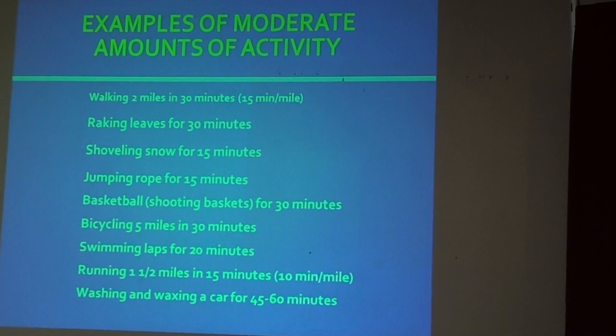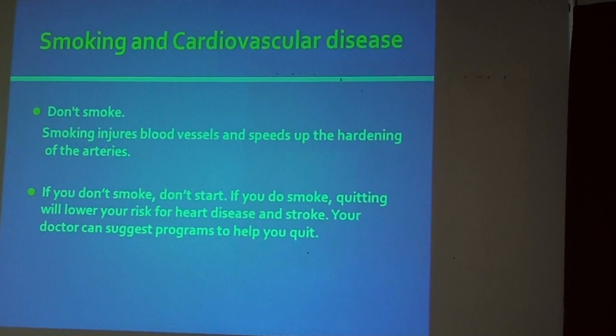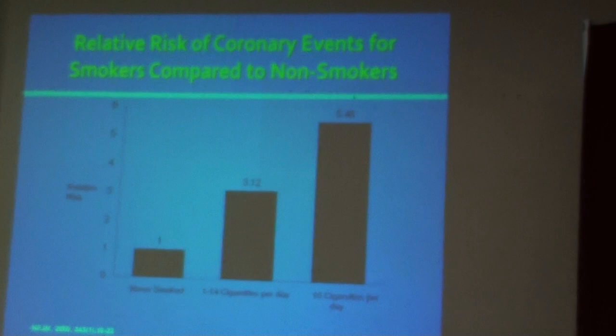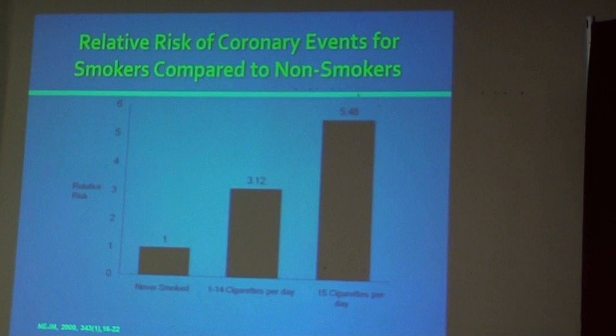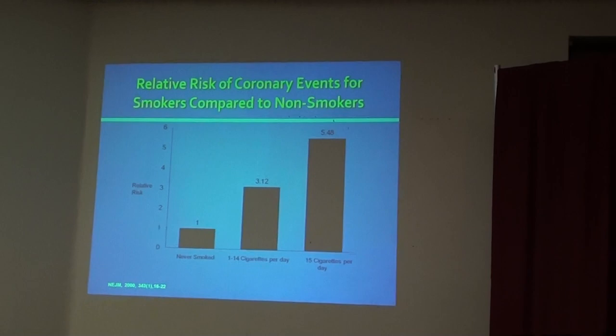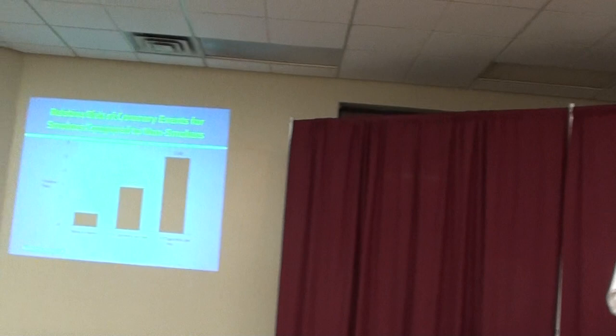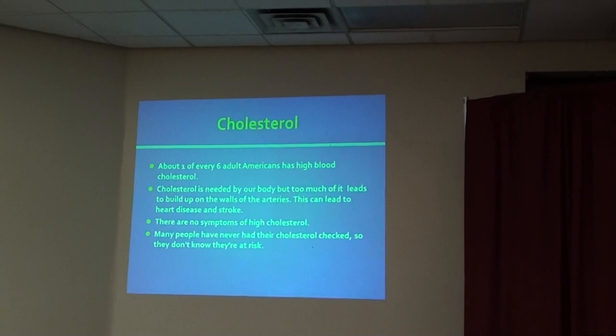Smoking is another big risk factor for cardiovascular disease. A study published in the New England Journal of Medicine shows that people who never smoked had a relative risk of heart attack of 1. People who smoke 1 to 14 cigarettes per day have a 3-times higher risk of heart attack. People who smoke 15 or more cigarettes have a 5-times higher risk. There is a linear relationship between the number of cigarettes smoked and heart attack risk.